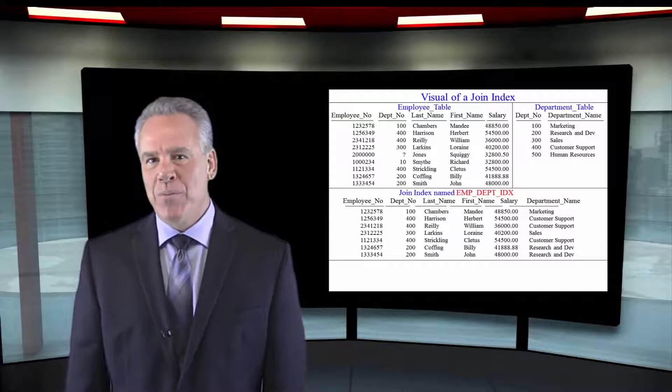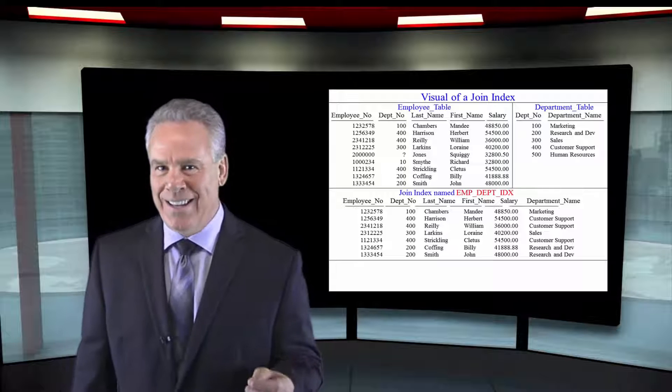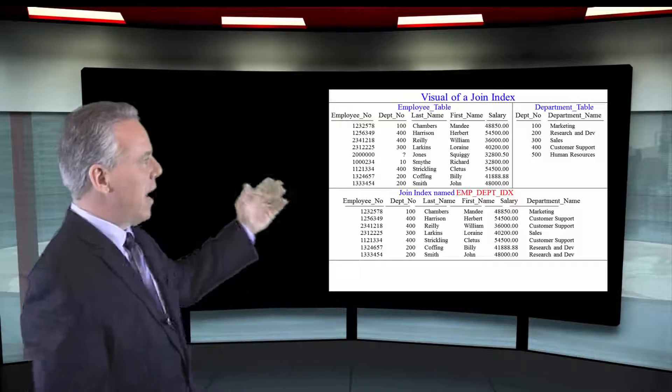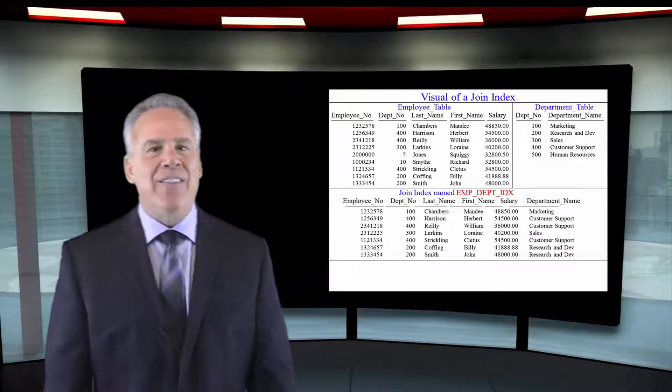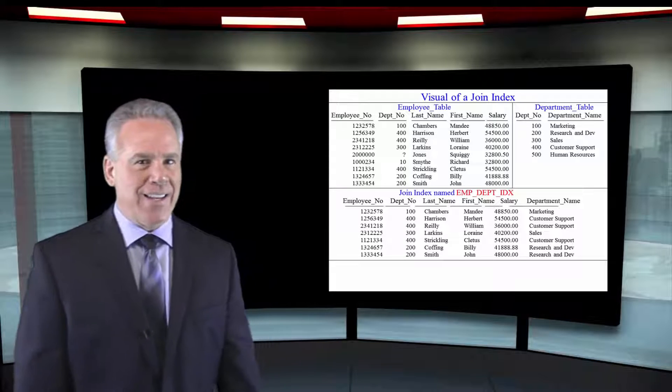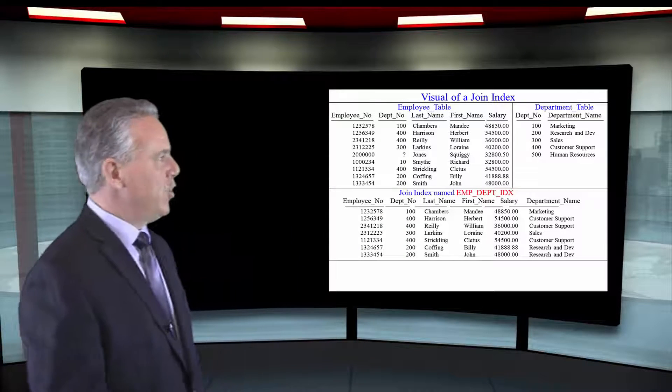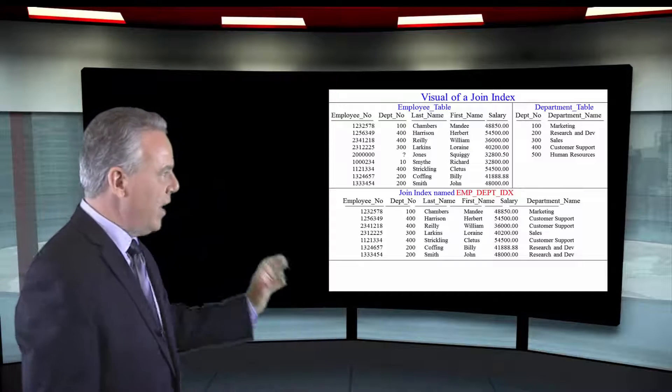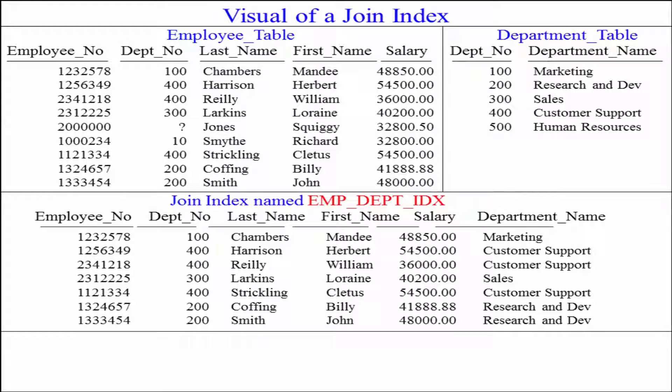Here, I've got my employee table, I've got my department table, and I've got my join index. Let's take a look at the top left. It's the employee table. There are those rows, and then, of course, there's my department table on the top right, and we're joining these all the time. So, we created a join index that will join those rows together, and it created this physical table itself.